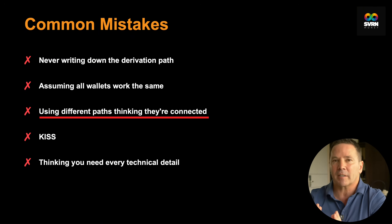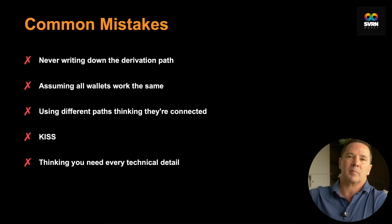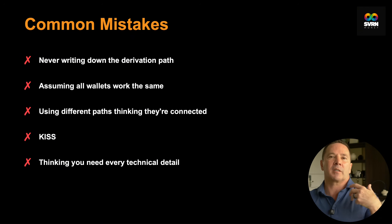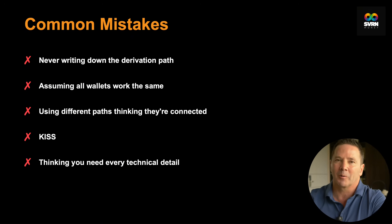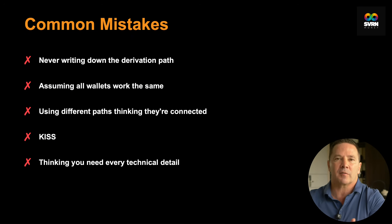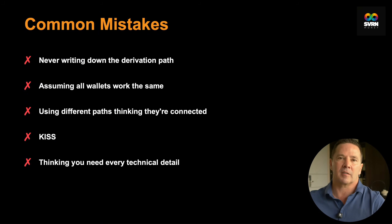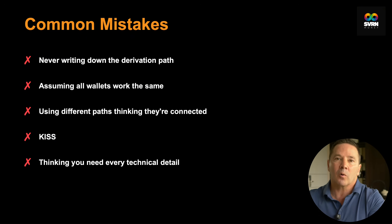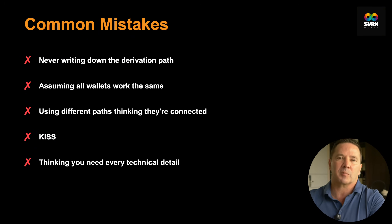Mistake three: using different derivation paths on different wallets with the same seed phrase, assuming they're connected. Sending Bitcoin to a Taproot wallet on a ColdCard and Native SegWit on a Trezor doesn't mean they all go into the same wallet. Those are completely different wallets — different apartments in the same building. You can access both with the same seed phrase, but you need to set both wallets to the exact same derivation path, or use wallet software that scans multiple derivation paths.